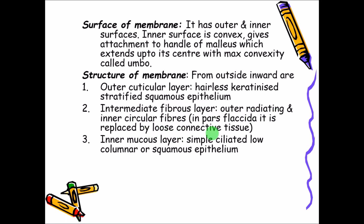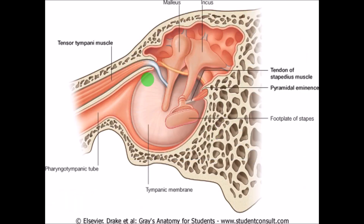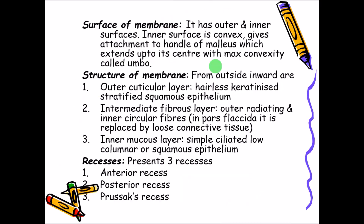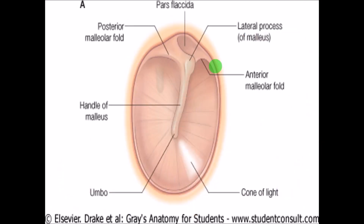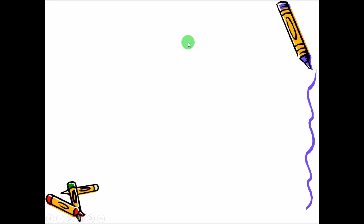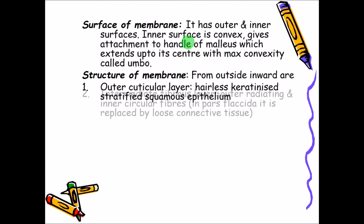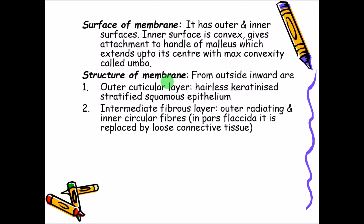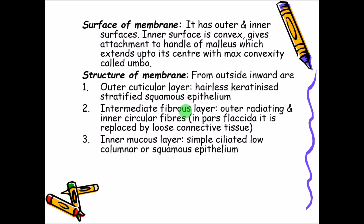In the pars flaccida, the fibrous layer is replaced by loose connective tissue. That is why there is no fibrous layer in the pars flaccida — as you can see, the upper part is lax and loose. Where there is a fibrous layer, the membrane is tense, as in the pars tensa.